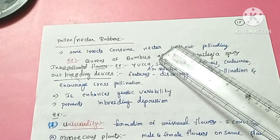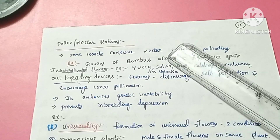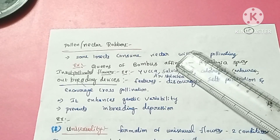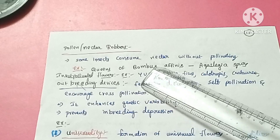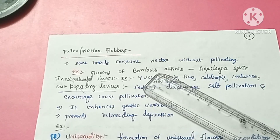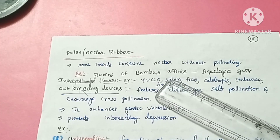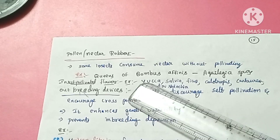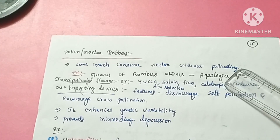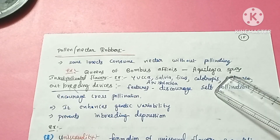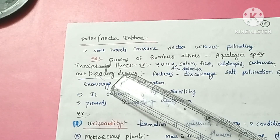Now, if we look at pollen and nectar robbers — some insects consume nectar without pollinating. For example, queens of Bombus affinis steal the nectar of Aquilegia spurs without pollinating. These nectar-stealing insects are called pollen nectar robbers.